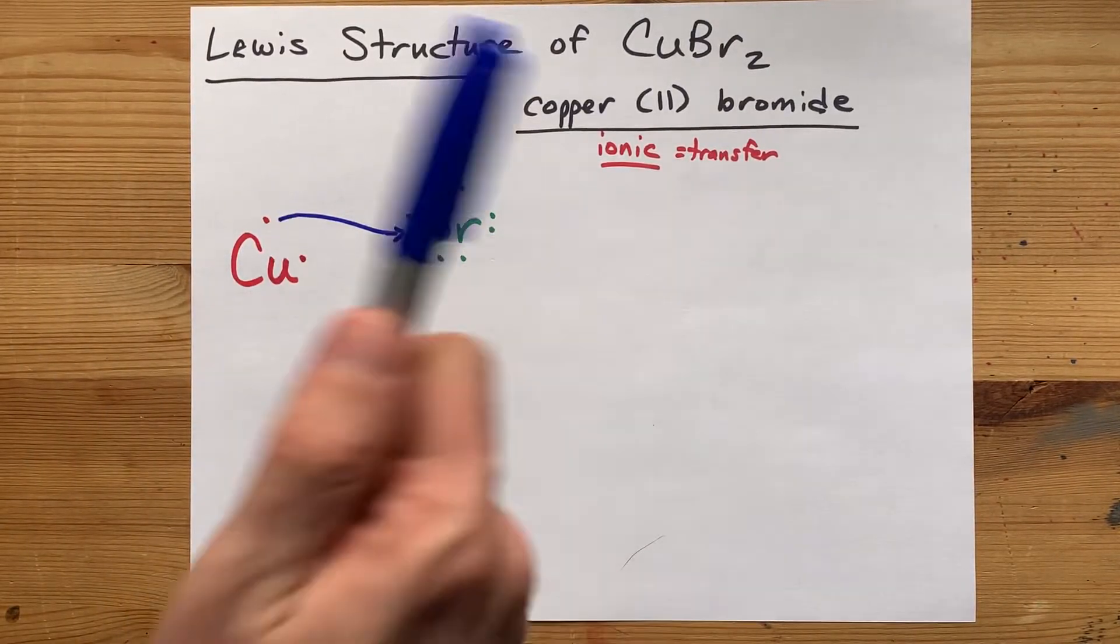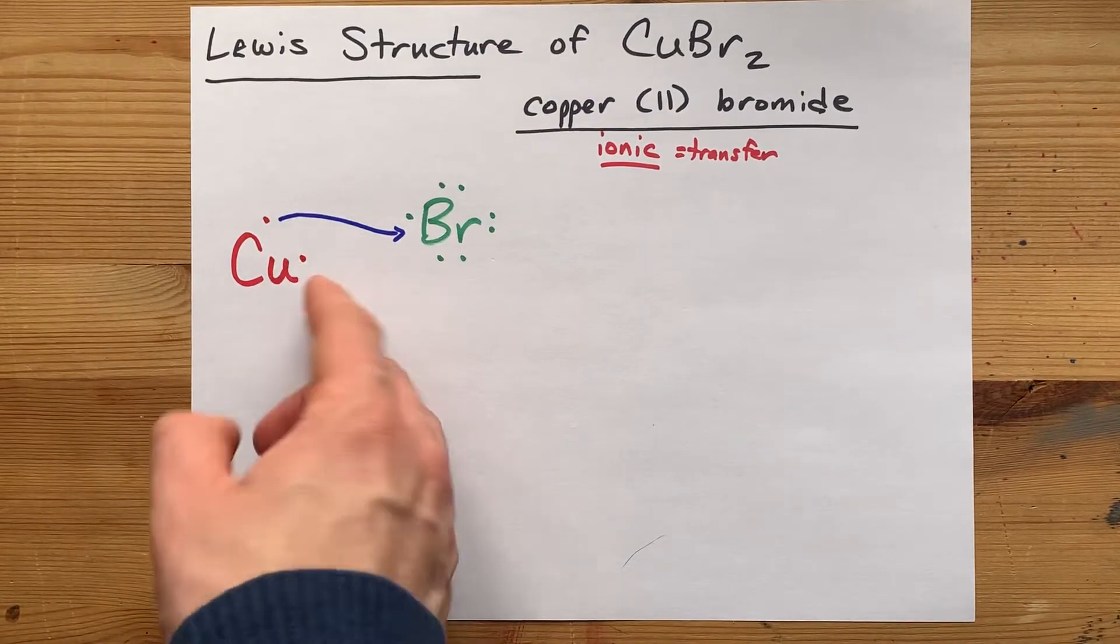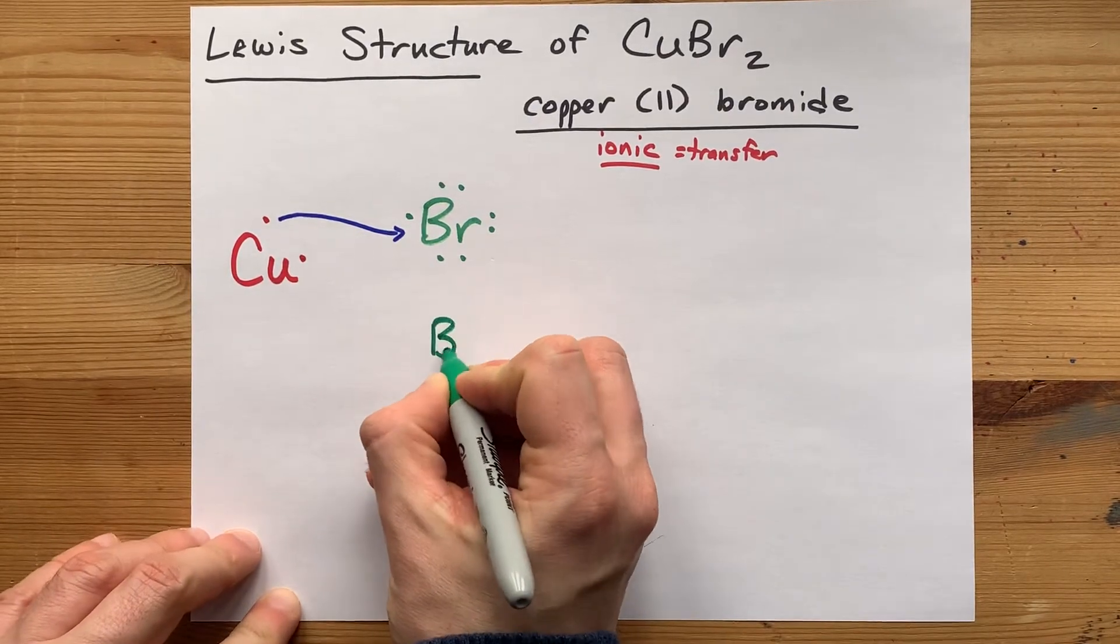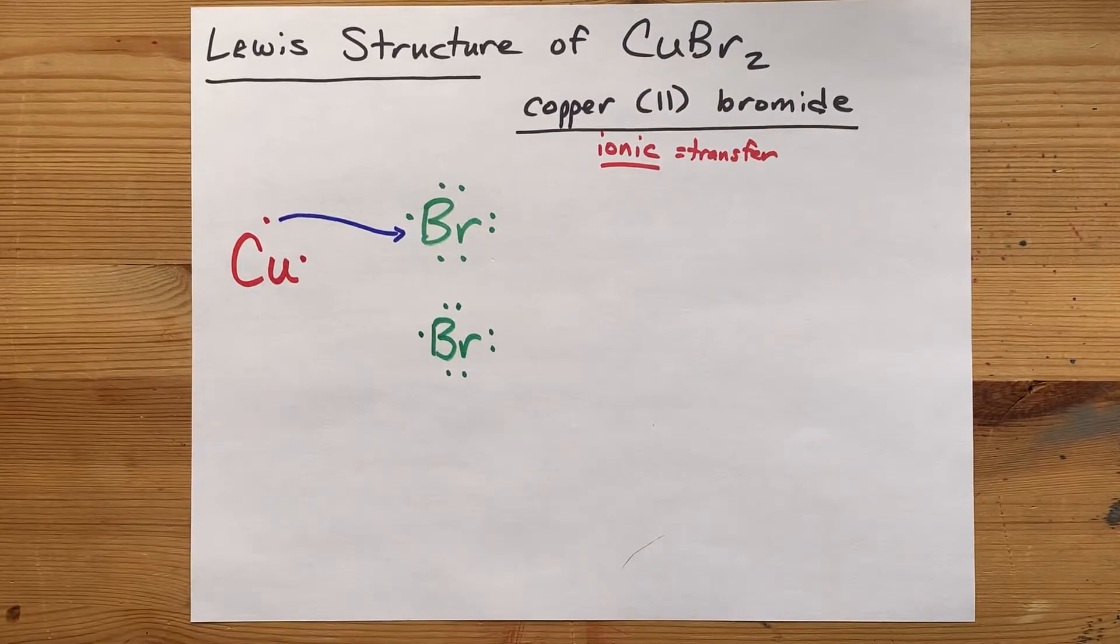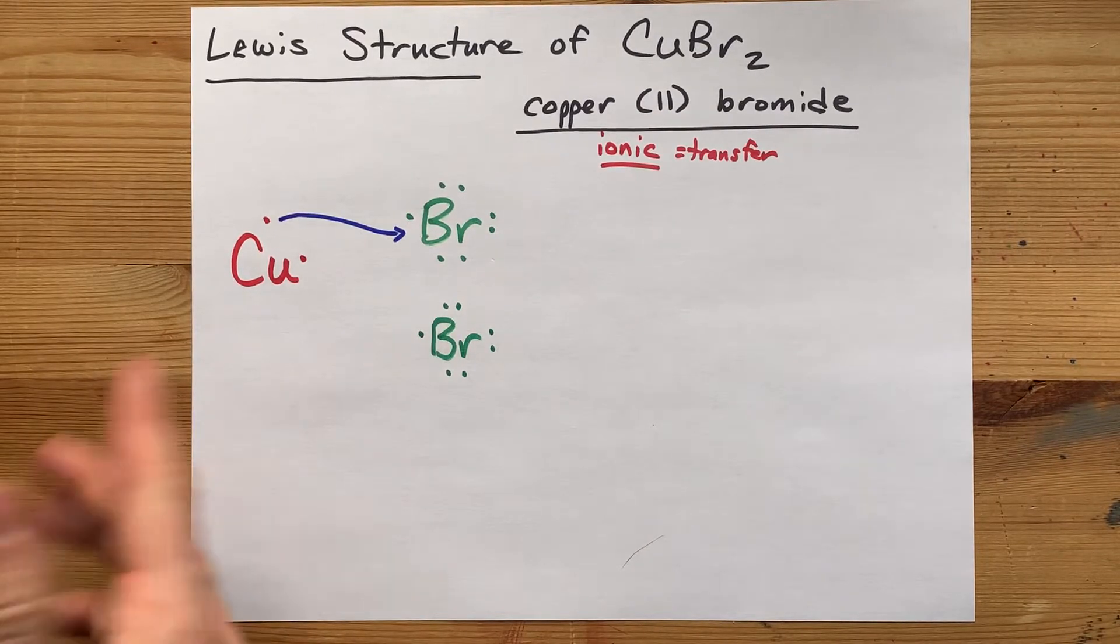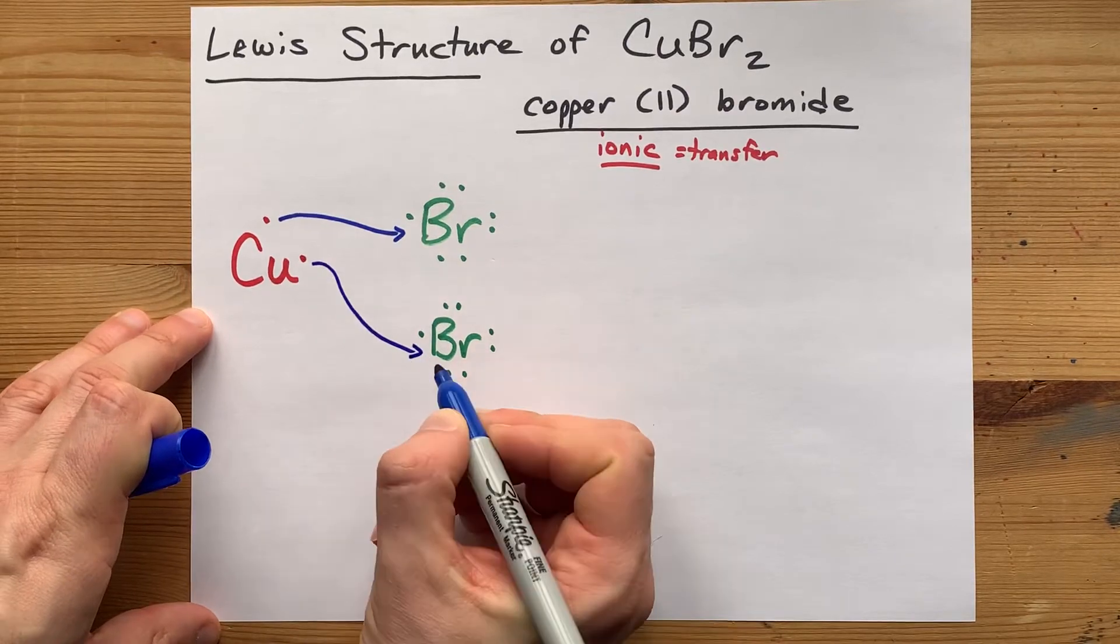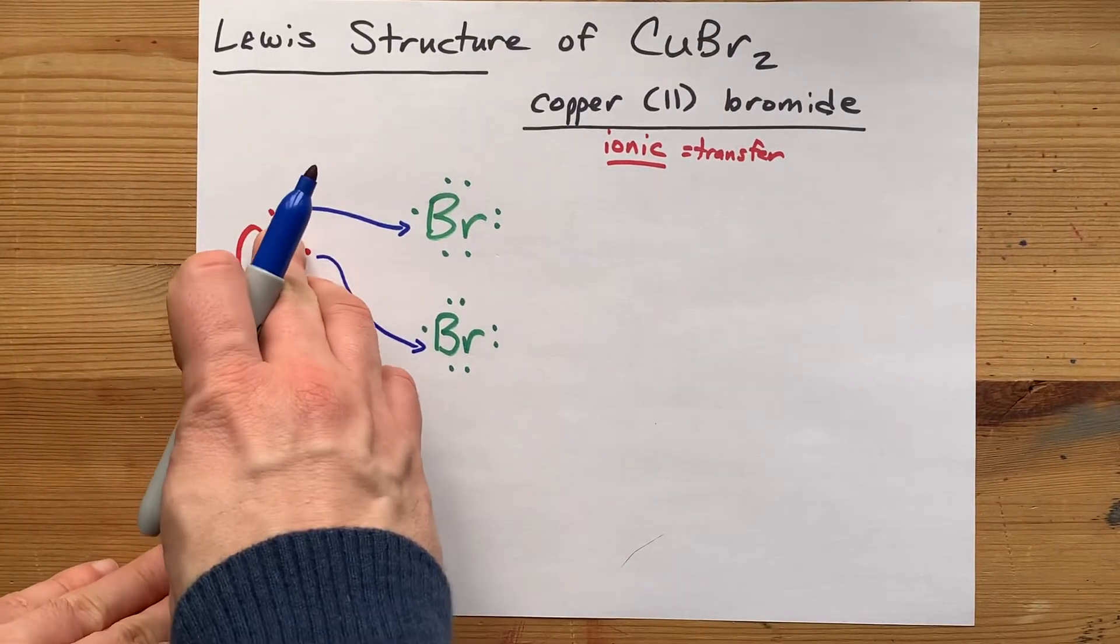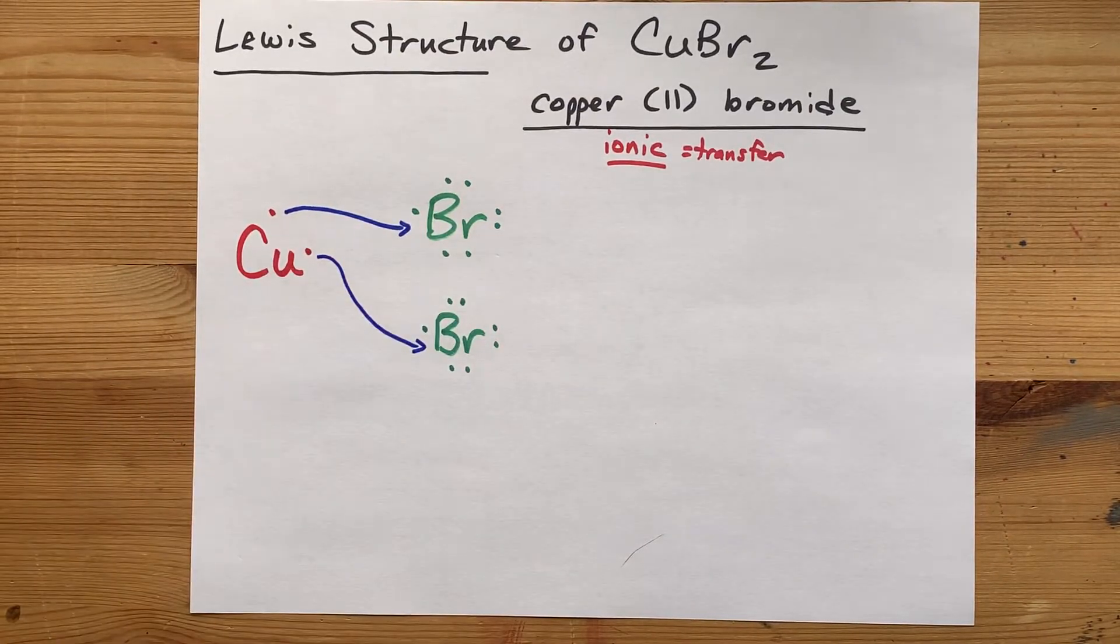But where's the extra electron from copper supposed to go? Well, the answer is you need another bromine atom with its 7 valence electrons. That will happily take the extra electron from copper, and you end up with 1 copper atom giving its electrons away to 2 different bromines.